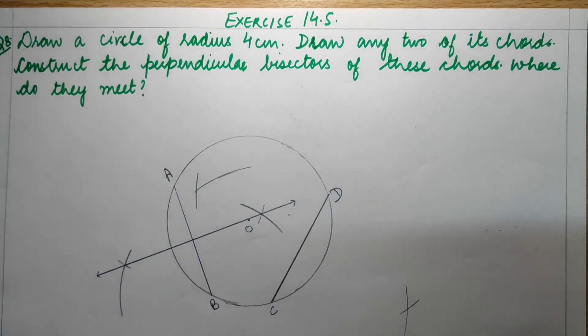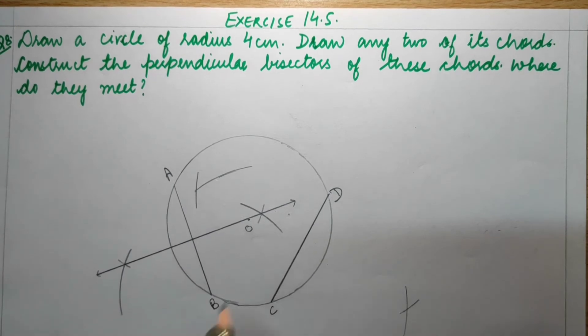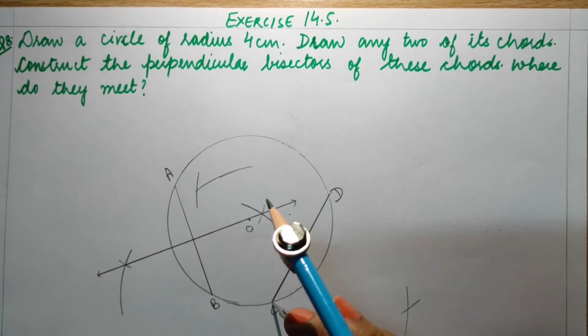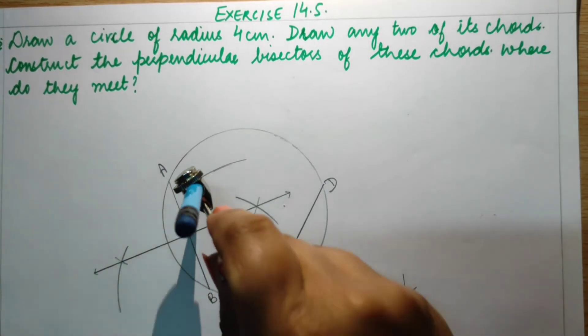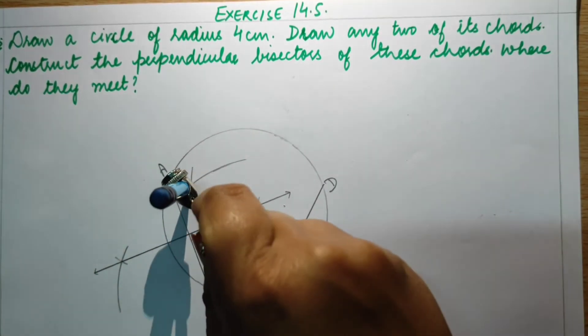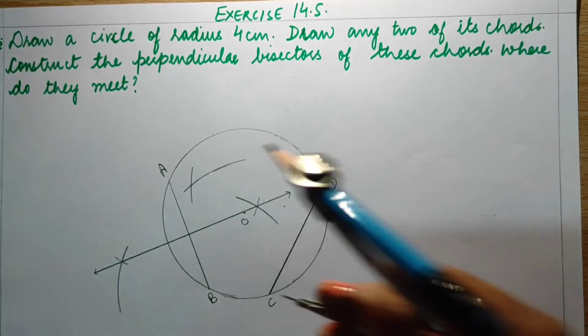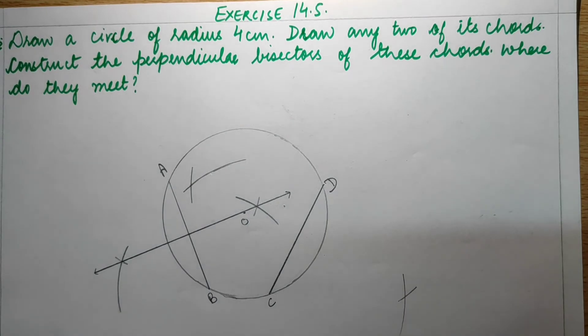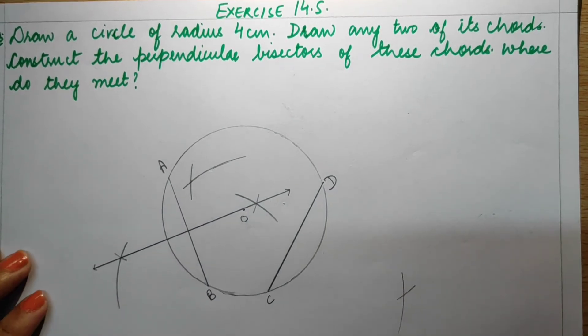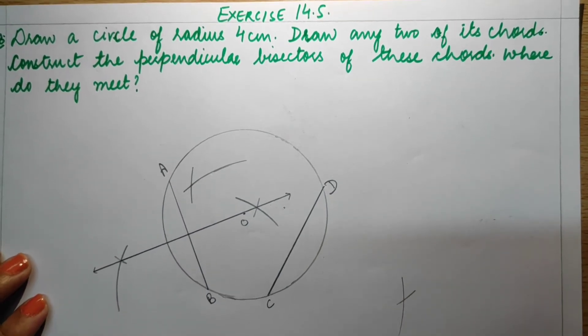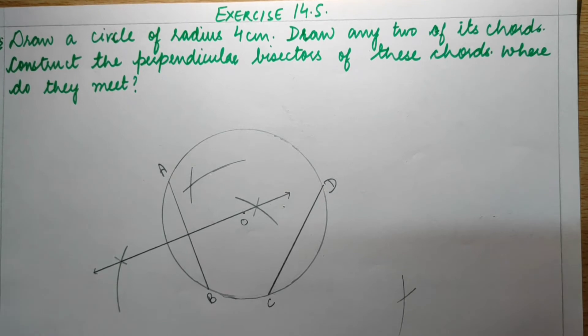We can extend the arc as needed. These two arcs are now cutting each other, so we can draw the perpendicular bisector of chord CD.